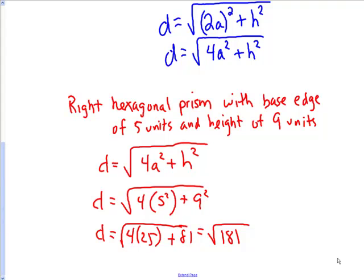The square root of 181 is approximately equal to 13.5 units.